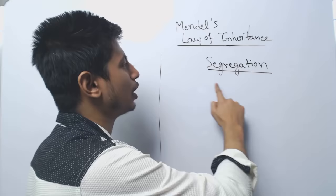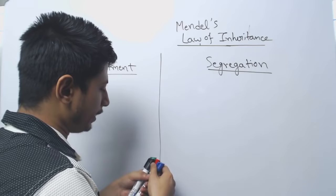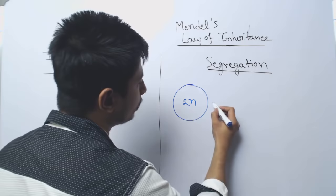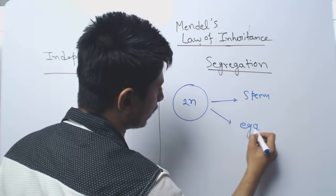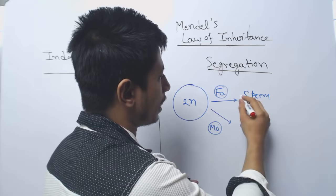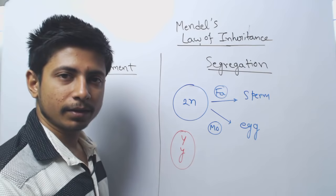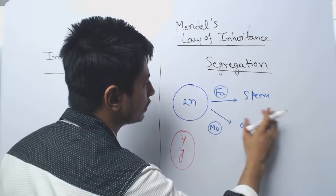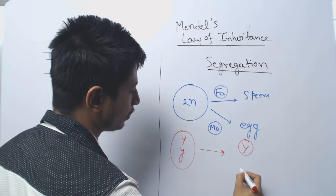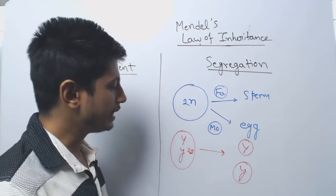The traits and the genes for those traits are separated during gametogenesis. Normal body cells are diploid (2n), containing nuclei. During gametogenesis, the mother forms eggs and the father forms sperm. During the formation of sperm or egg, either of the two alleles can be passed on. For example, let us say an individual has the genotype capital Y and small y. During gametogenesis, they can separate to give either capital Y or small y.